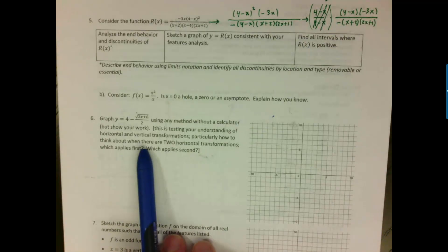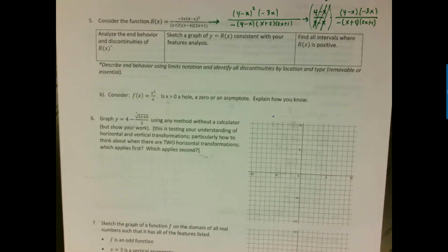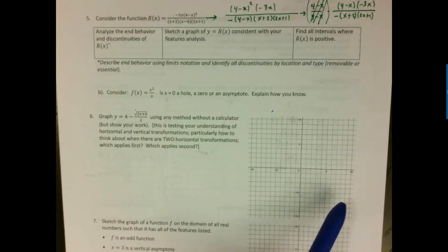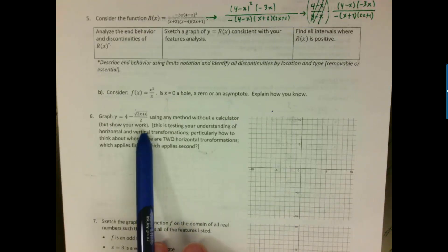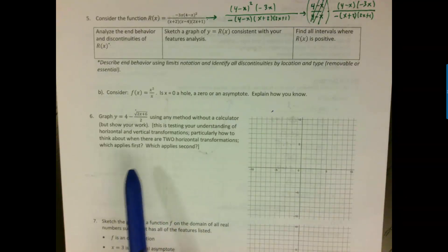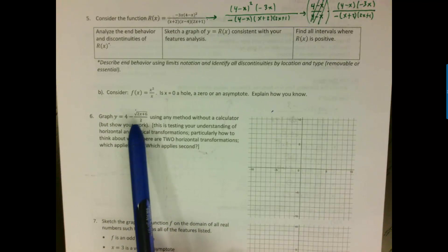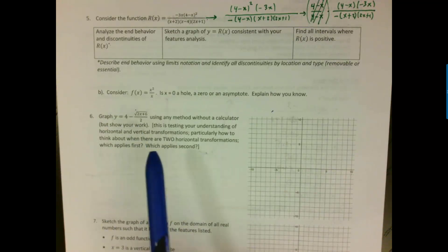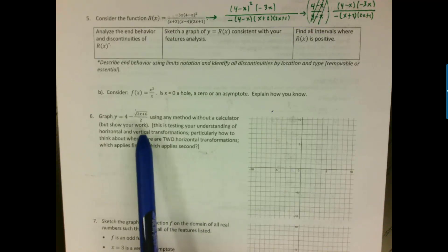The next question asks you to graph a transformation of the square root function without a calculator. You could plug it into Desmos or plot individual points, but the point is to use transformations — thinking about which transformations are being applied and in what order. We have two horizontal transformations generated by the 2 and the 6, and two vertical transformations from the 4 and the negative one half.